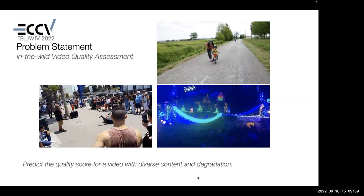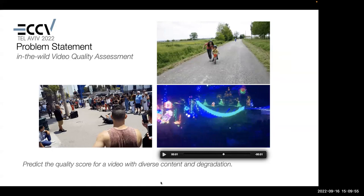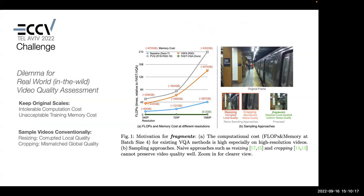Our goal is to predict a quality score for these videos, or compare the quality between them — for instance, the bottom-right video clearly has the worst quality. We need to predict these quality scores even when videos have diverse content and degradation. We choose to use deep neural network-based methods because they are content-aware and have very rich features. But while using deep neural networks for video quality assessment, we meet a big challenge — a dilemma for real-world VQA.